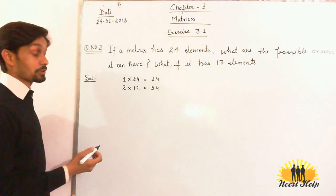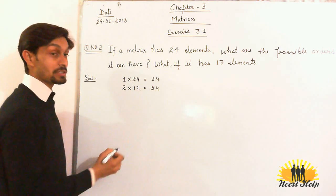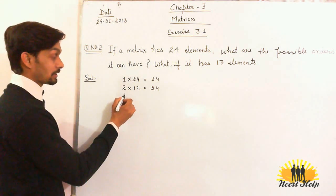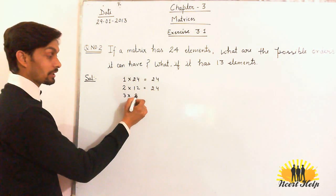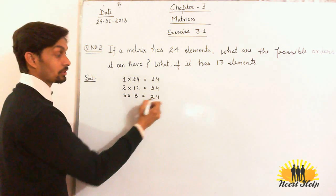Other possibilities are there. As we can see, 24 is divisible by 3. Then 3 rows into, divide 24 by 3, 8 columns. Again you will get 24.